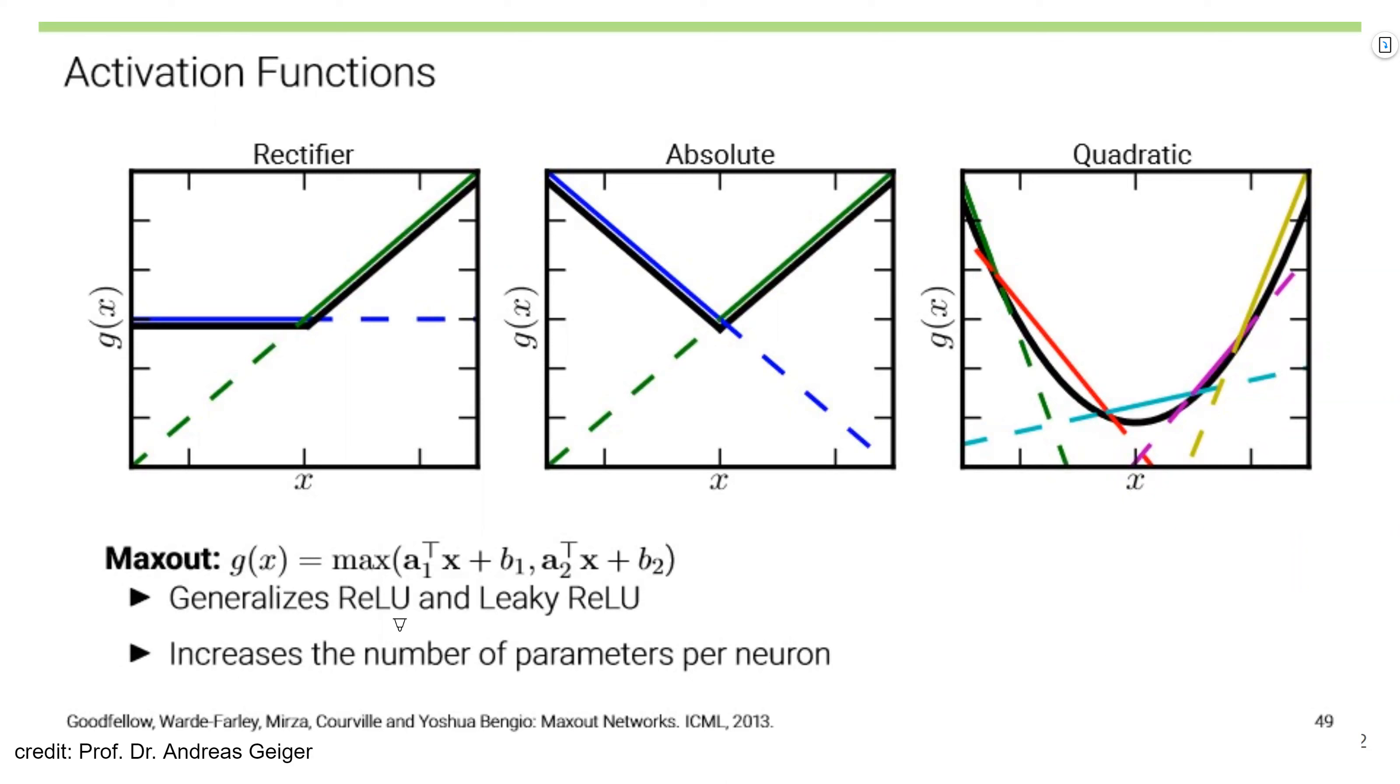And you can generalize ReLU and leaky ReLU using this maxout. According to the values we set, it can have various features like this. However, it increases the number of parameters per neuron. That's one disadvantage.